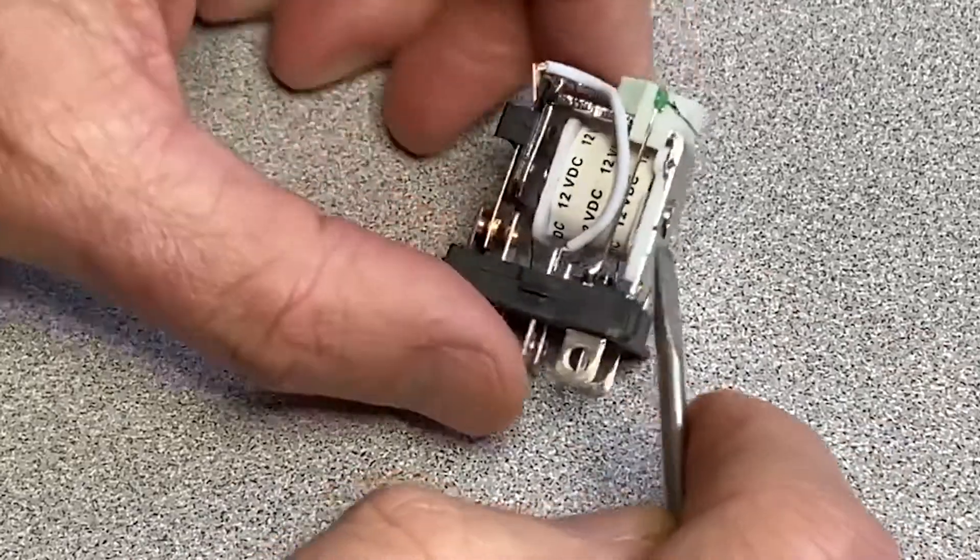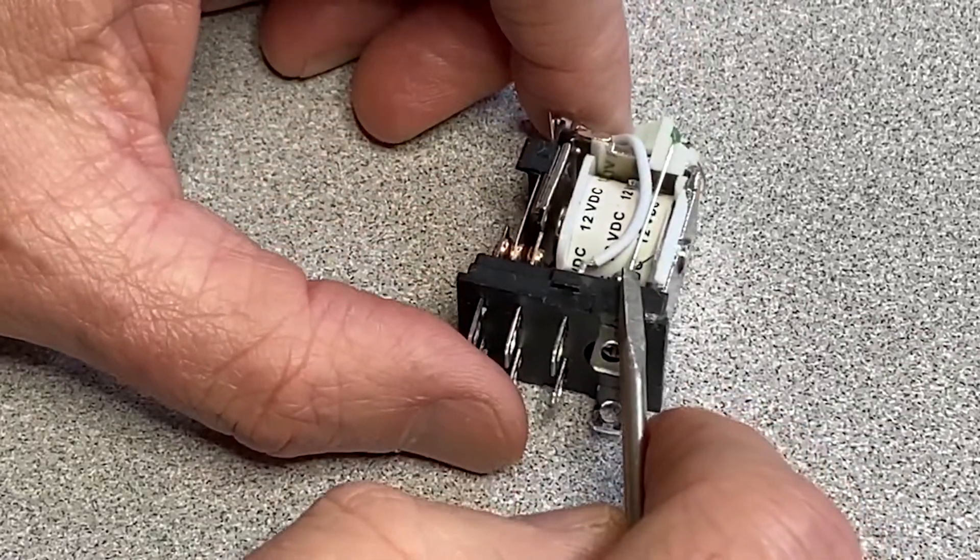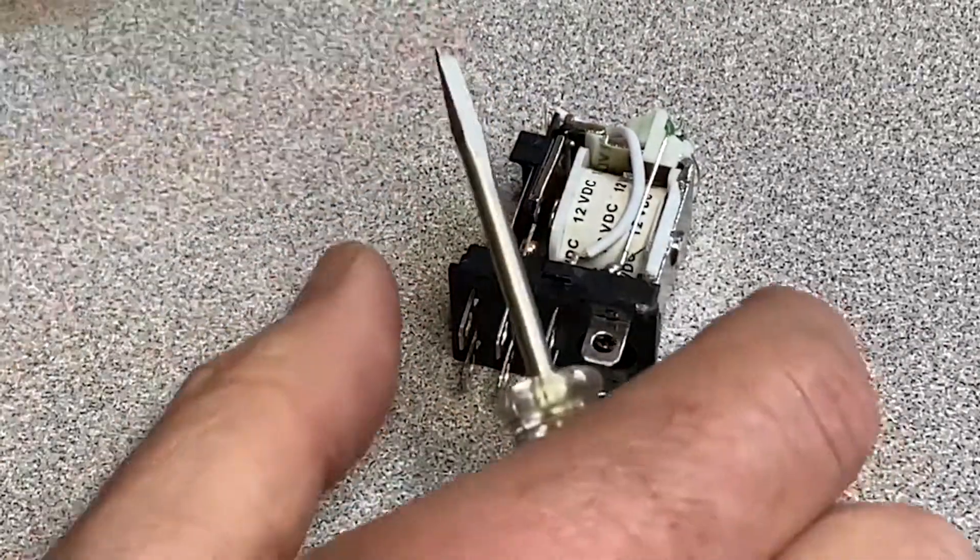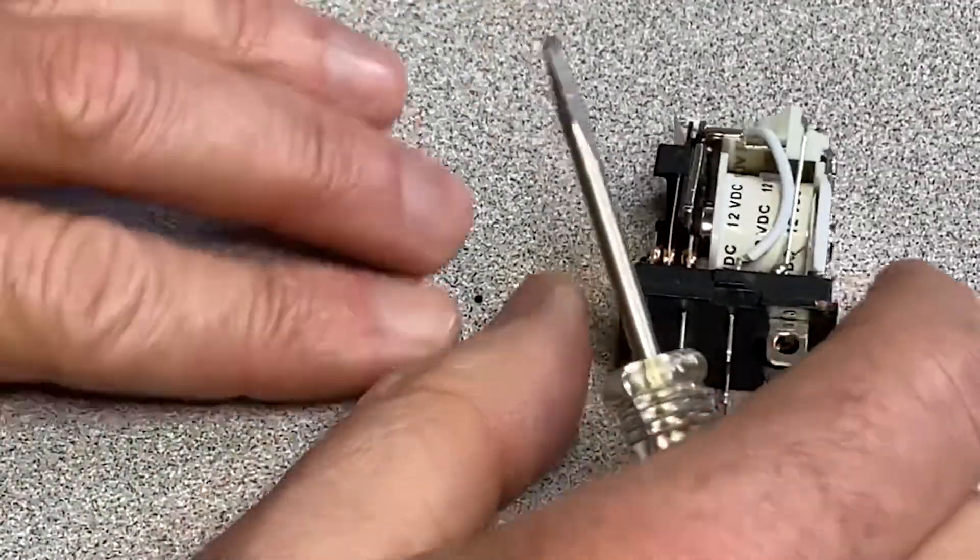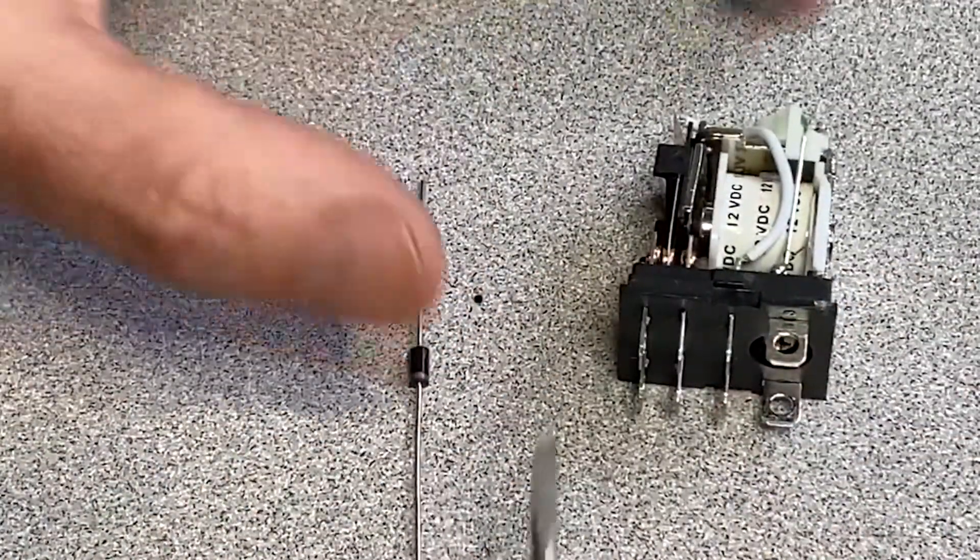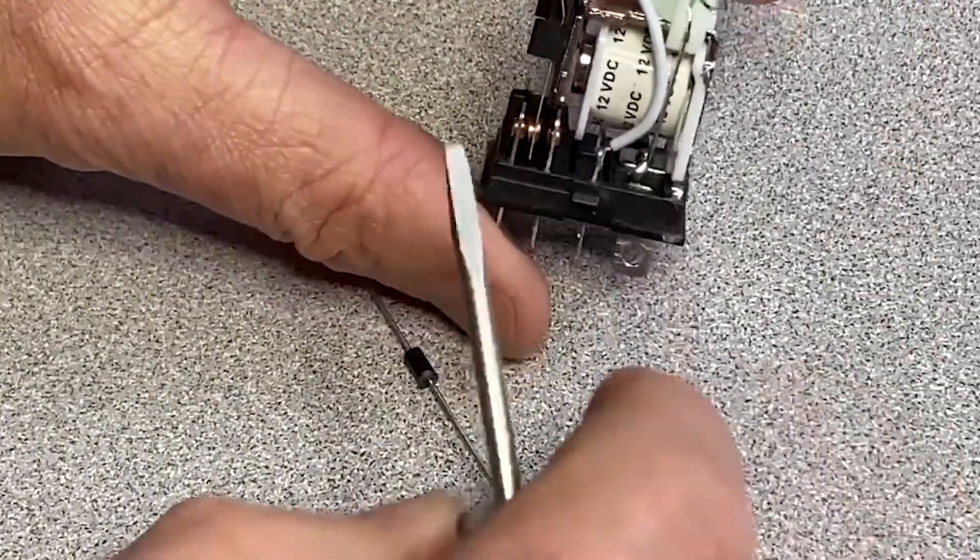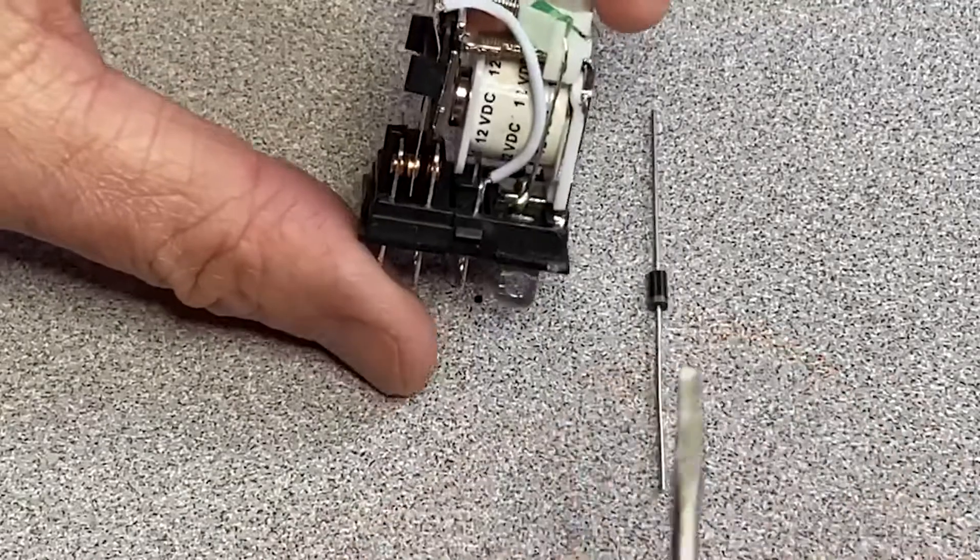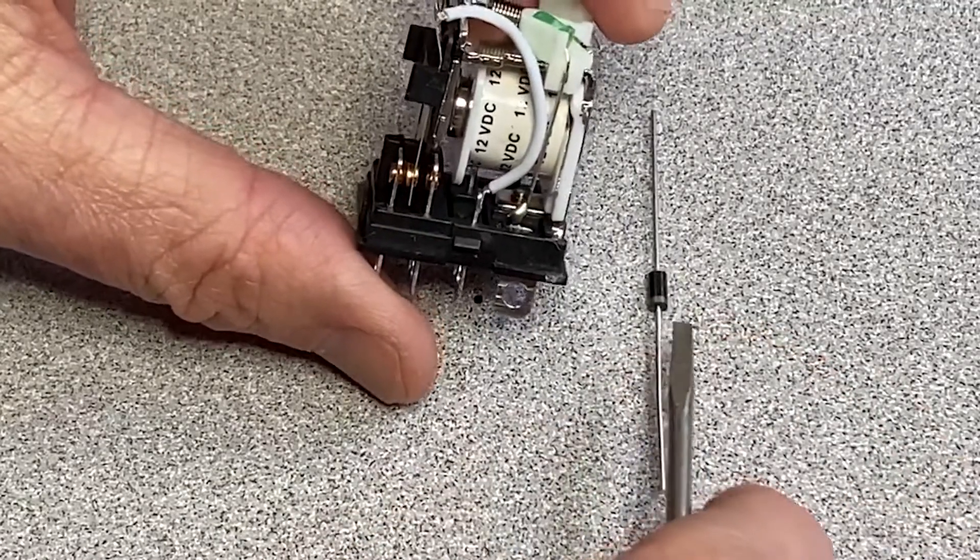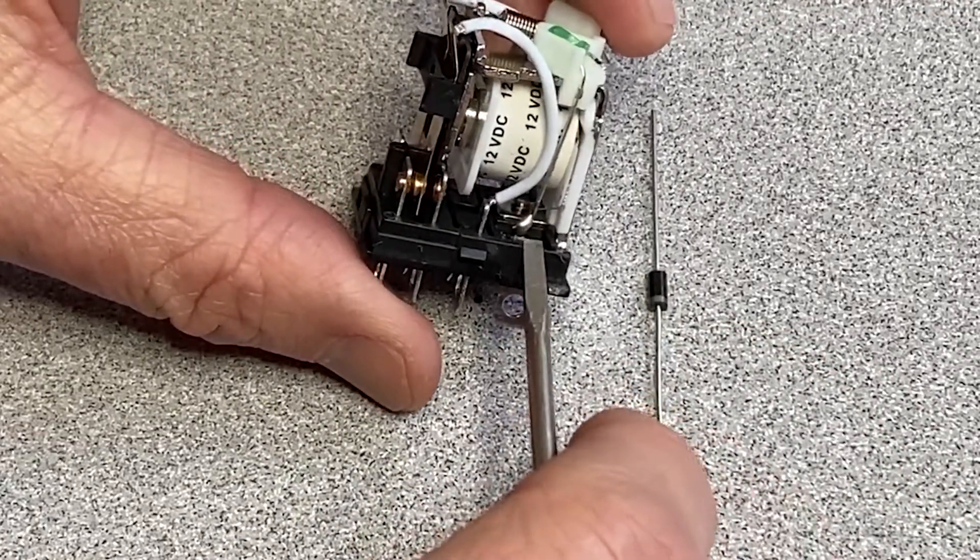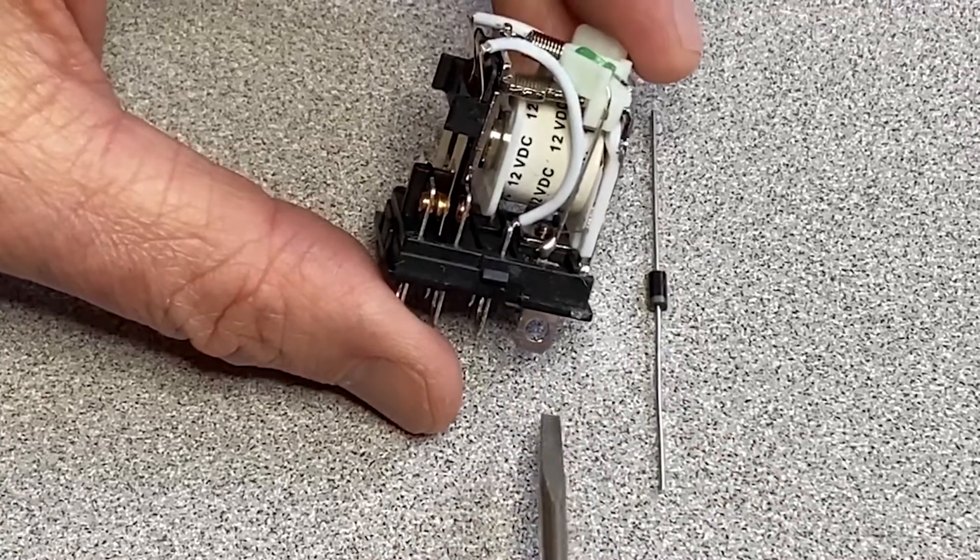So you need to put the diode in so that it blocks the power coming in in normal circumstance. So in normal circumstance, it comes in. So you want the leg of the diode with the white line to be connected to the positive side.